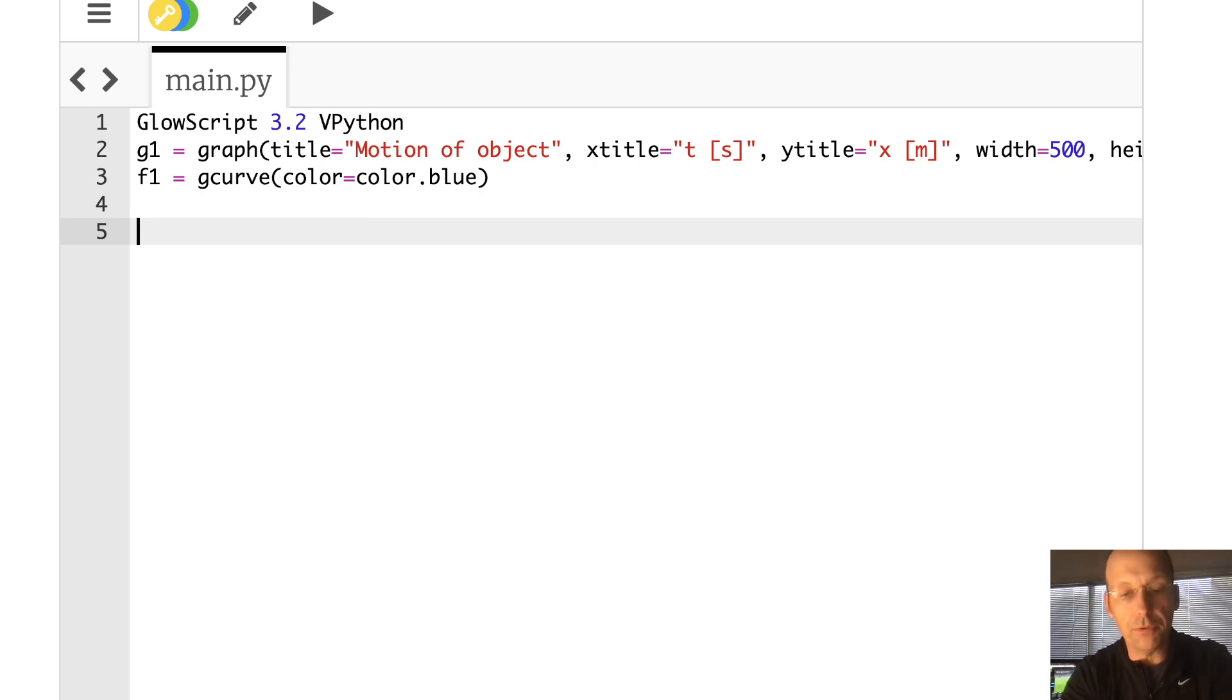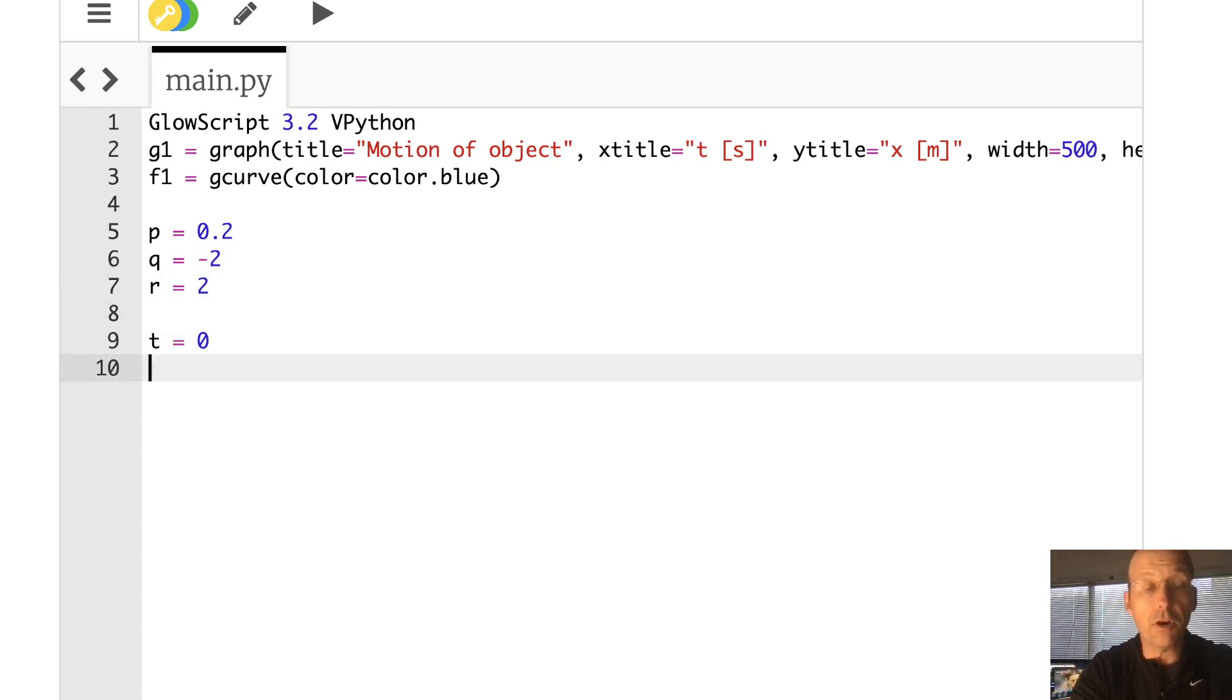So now let's start with some variables. I'm going to write down my variables. P equals 0.2. Q equals negative 2. I'm not putting the units in. And then r equals 2. T equals 0. DT equals 0.01.